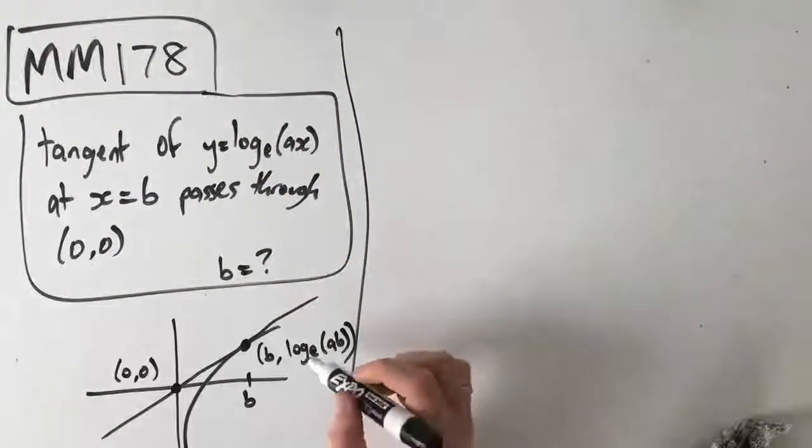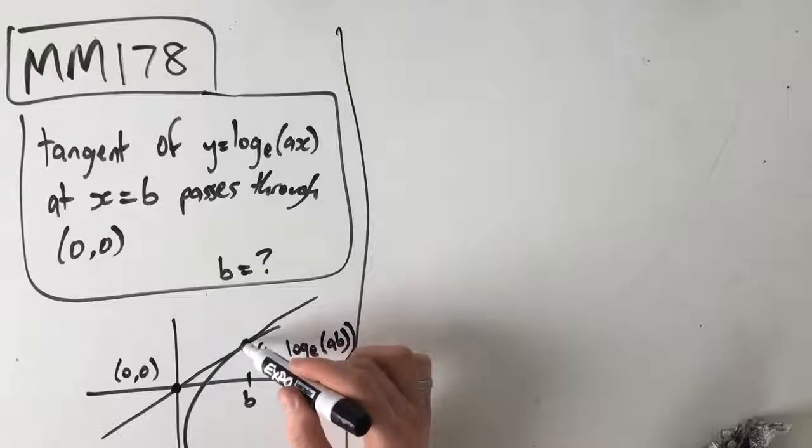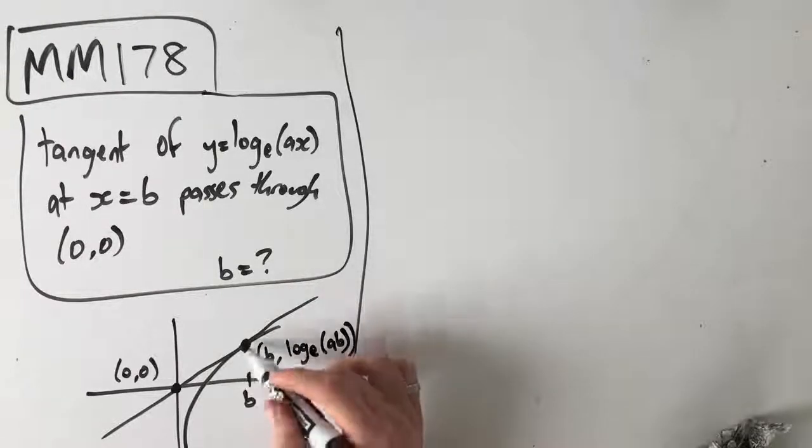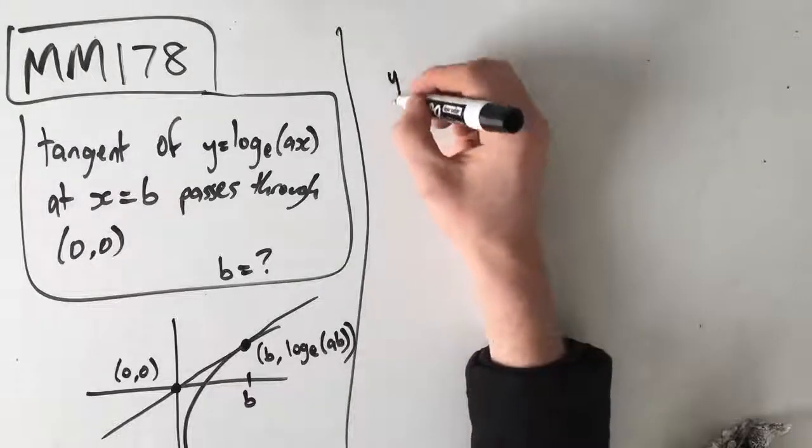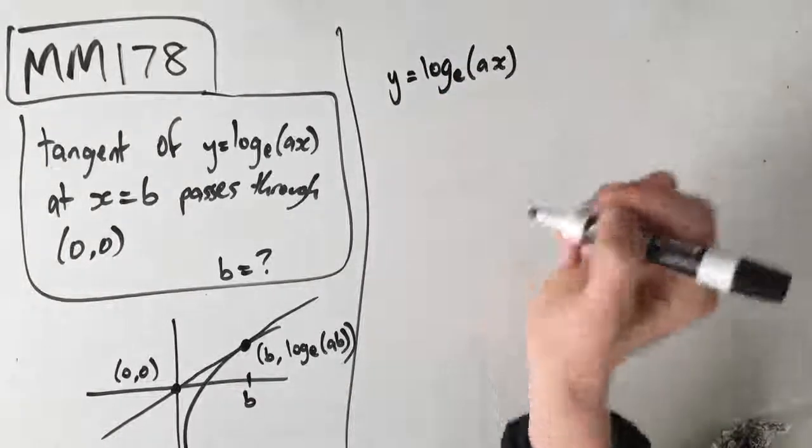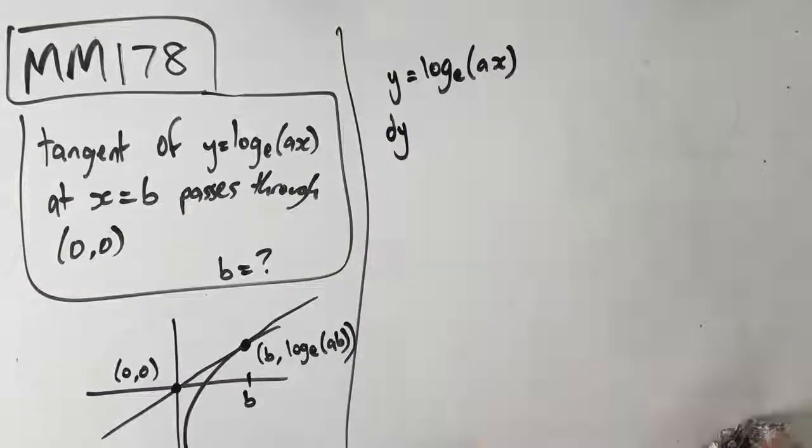We know that the gradient of this graph here is equal to the derivative at x equals b. So, we know that y is equal to log_e(ax), and dy/dx